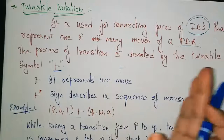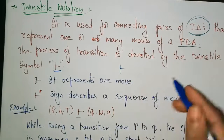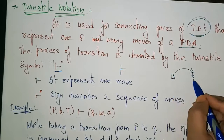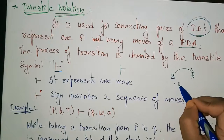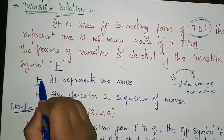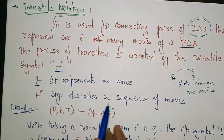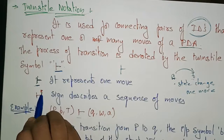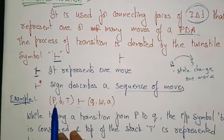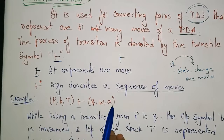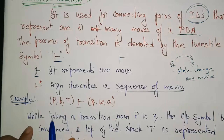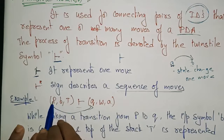The basic turnstile symbol represents one move — from one state to another state. Whenever a state is changing, the input symbol is being consumed, say from reading 'a' to reading 'b', and the state changes accordingly — that represents one move, denoted by the turnstile notation. When there is a star above the turnstile symbol, that describes a sequence of many moves. In the example, we have a triple ID on each side connected by the turnstile, representing one or many moves of a PDA.